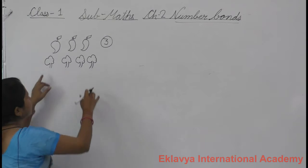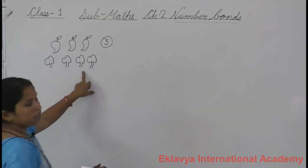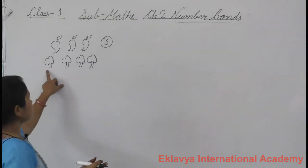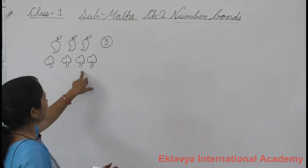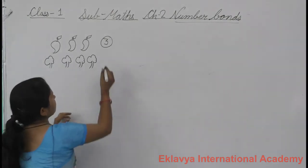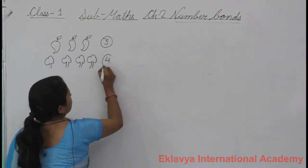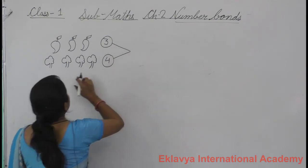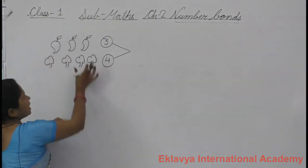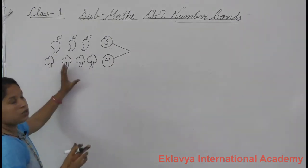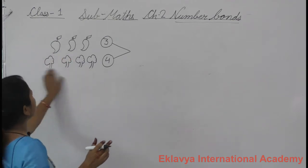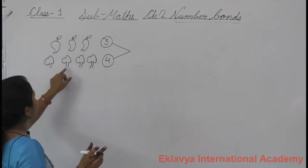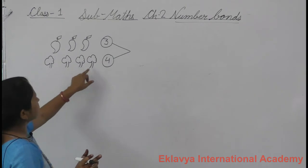Yes. What is this? Trees. Count how many trees. One, two, three, four. Four. And now count both mangoes and trees together. One, two, three, four, five, six, seven.